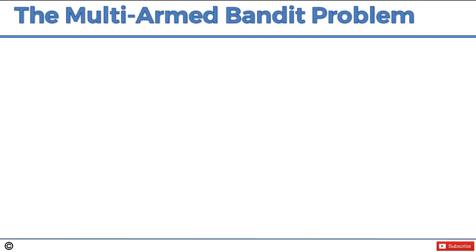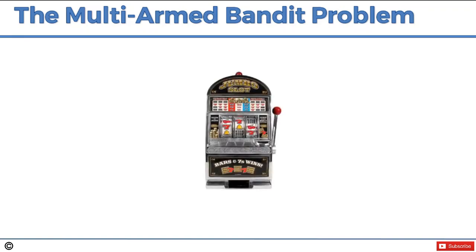First of all, what on earth is a multi-armed bandit? The first thing that comes to mind is like a robber going into a bank or somebody with a gun. But actually a bandit, or a one-armed bandit — let's simplify things — a one-armed bandit is a slot machine. Why is it called a one-armed bandit? Well, it's got a bit of history. Back in the day, they used to have a handle on the right, and you can still see that in movies. Some places you can still find these slot machines where you actually have to pull the handle, because now they're all electronic and you just press a button.